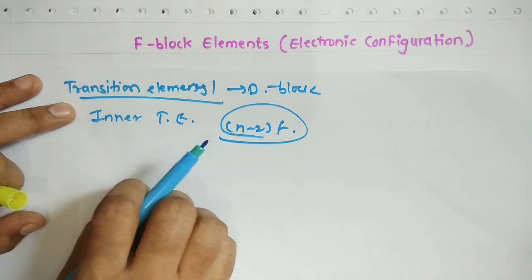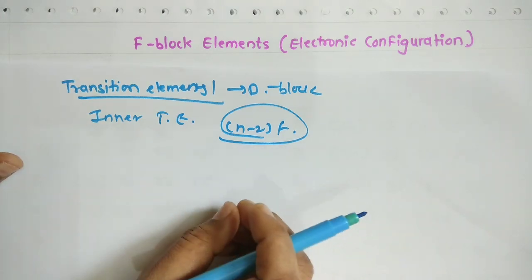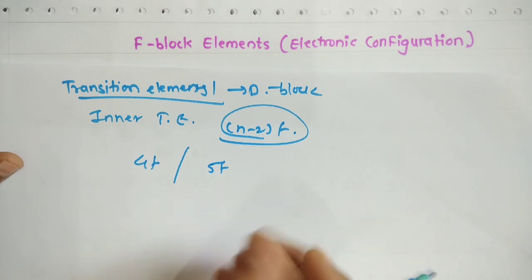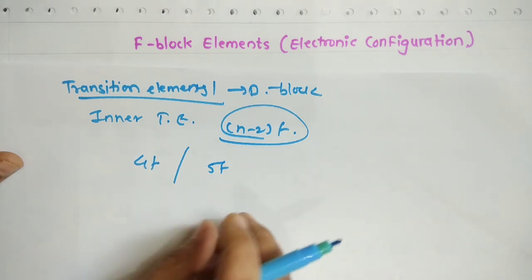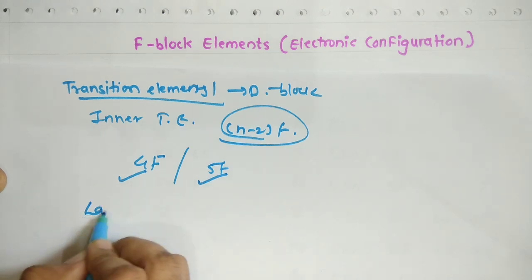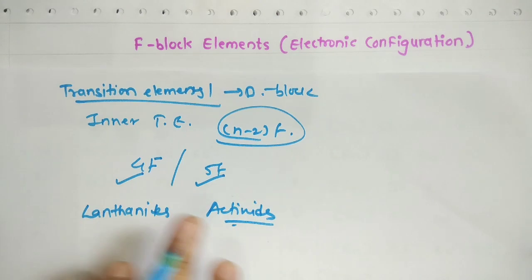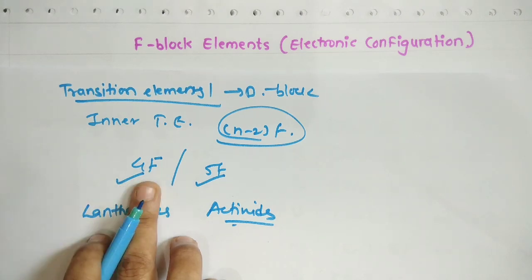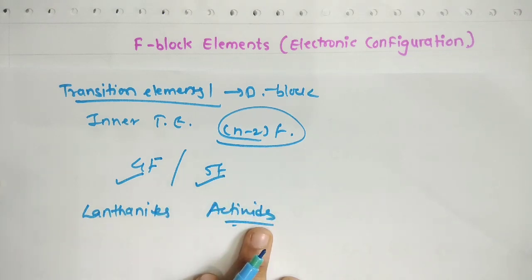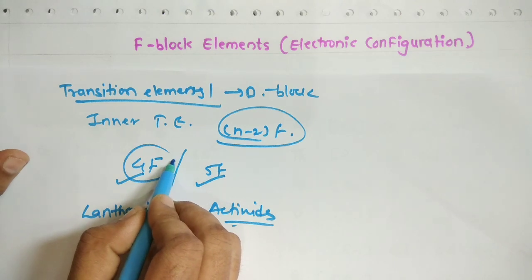The differentiating electron in inner transition elements may enter either the 4f or the 5f orbital. Based on that, they are classified as the lanthanide series and the actinide series. Where the last electron enters the 4f series, we call it a lanthanide, and where it enters the 5f series, we call it an actinide. In the lanthanide series, electrons enter into the 4f orbital.